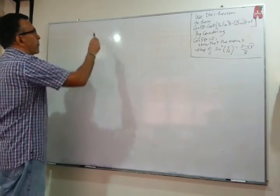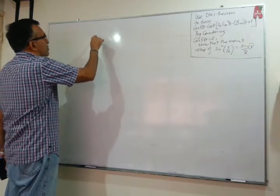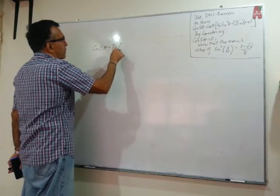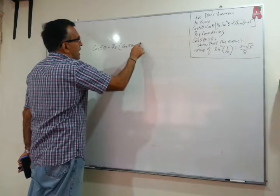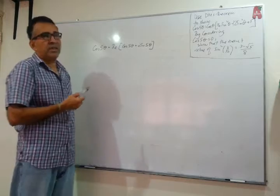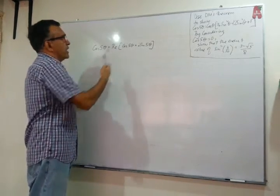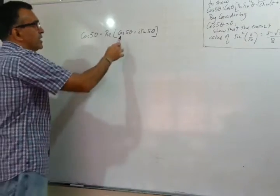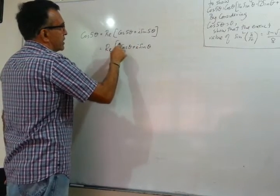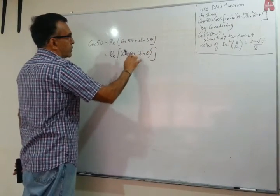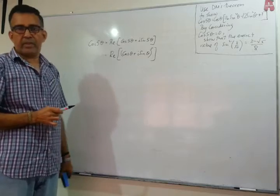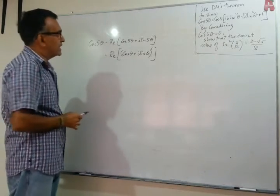Let's start slowly. We're looking for cos5θ and we're going to use De Moivre's Theorem. So cos5θ equals the real part of (cos5θ + i sin5θ). Now, that expression in brackets equals the real part of (cosθ + i sinθ) raised to the power of 5, because of De Moivre's Theorem: (cosθ + i sinθ)^5 = cos5θ + i sin5θ.